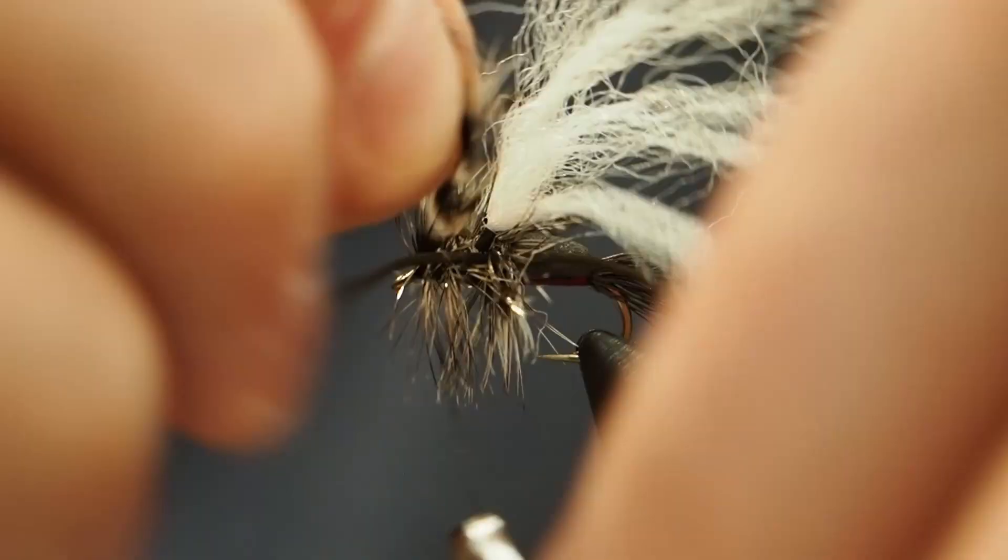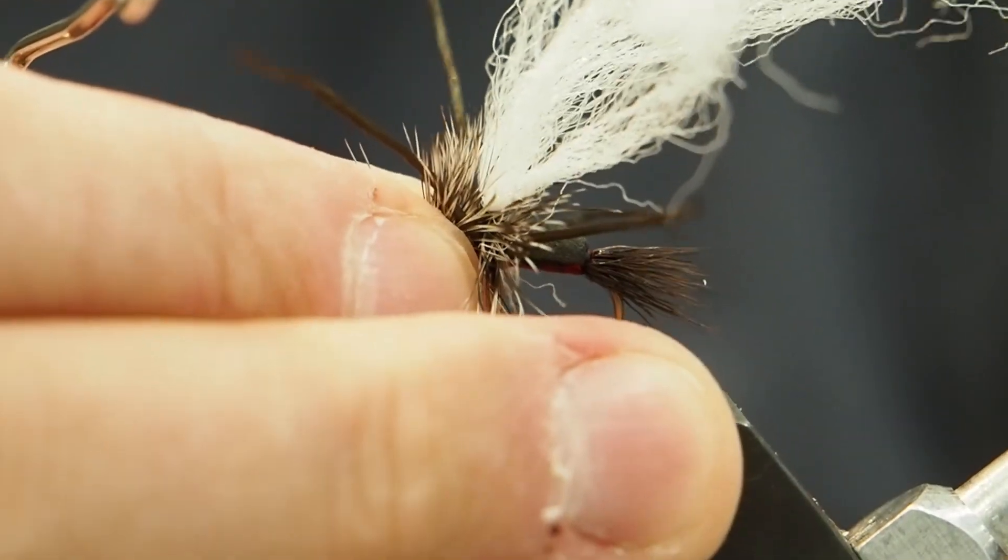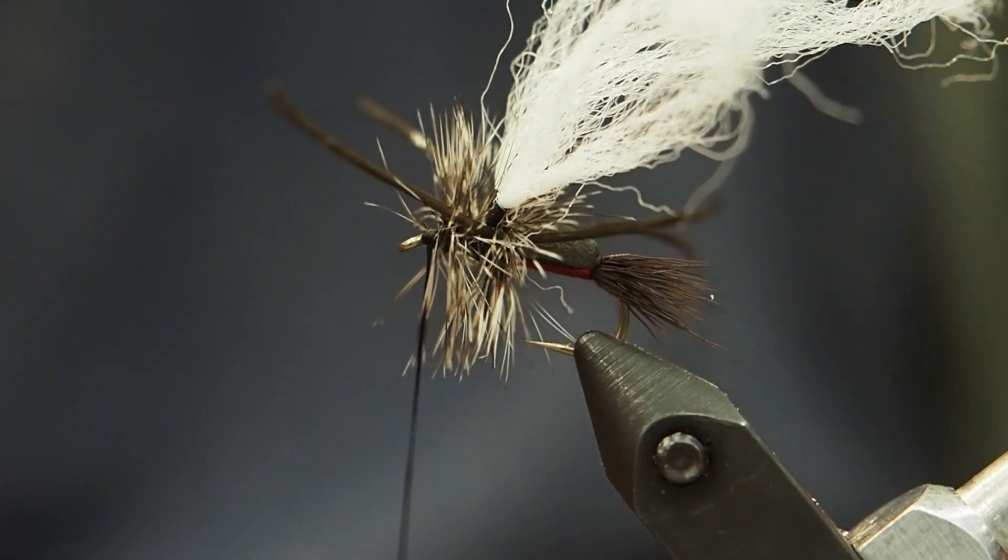Now I'm just palmering that hackle forward. This is a really bushy pattern, so you can see we got a lot of hackle there. Again, don't crowd the eye. I'm going to whip finish it to tie it off.